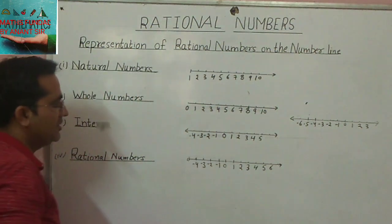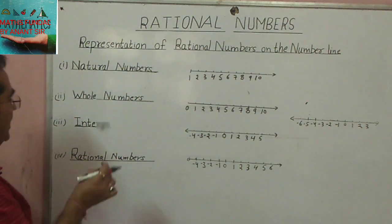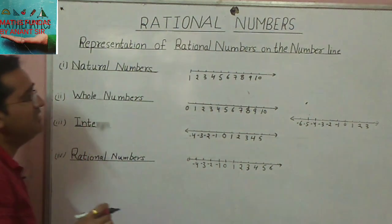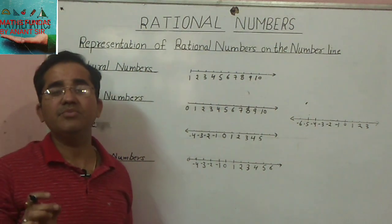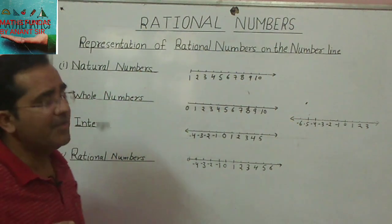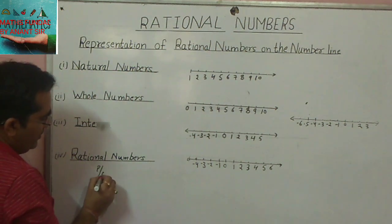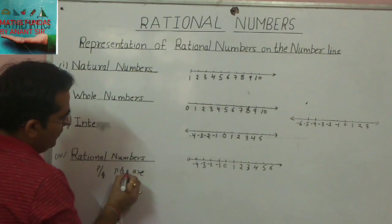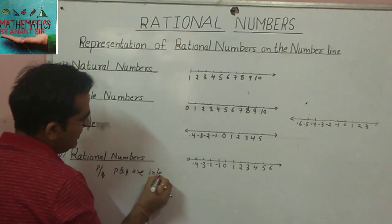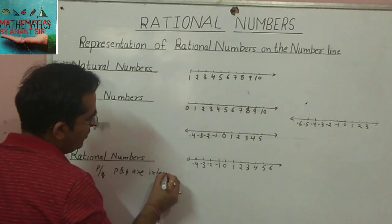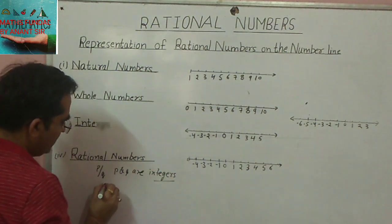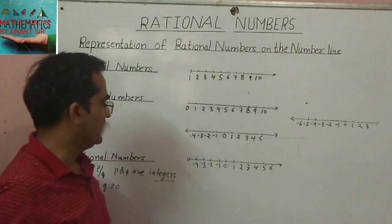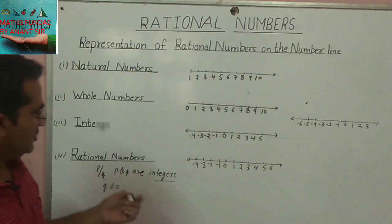Now our topic is representation of rational numbers on the number line. A rational number means a number which can be written in the form p upon q, where p and q are integers and q is not equal to zero — the denominator cannot be zero. I'll explain with a few examples.